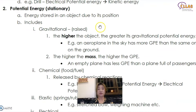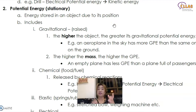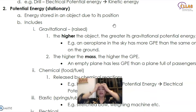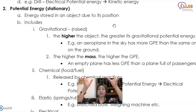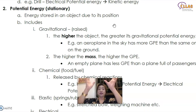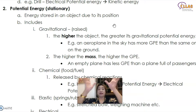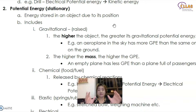Potential energy is energy stored in an object due to its position, and it does change — it changes according to height and mass. The higher the object, the greater its gravitational potential energy. So you can imagine the aeroplane in the sky has got more GPE than the same one on the ground. The higher the mass also, the higher the GPE. So an empty plane has less GPE than a plane full of passengers. Mass matters too.